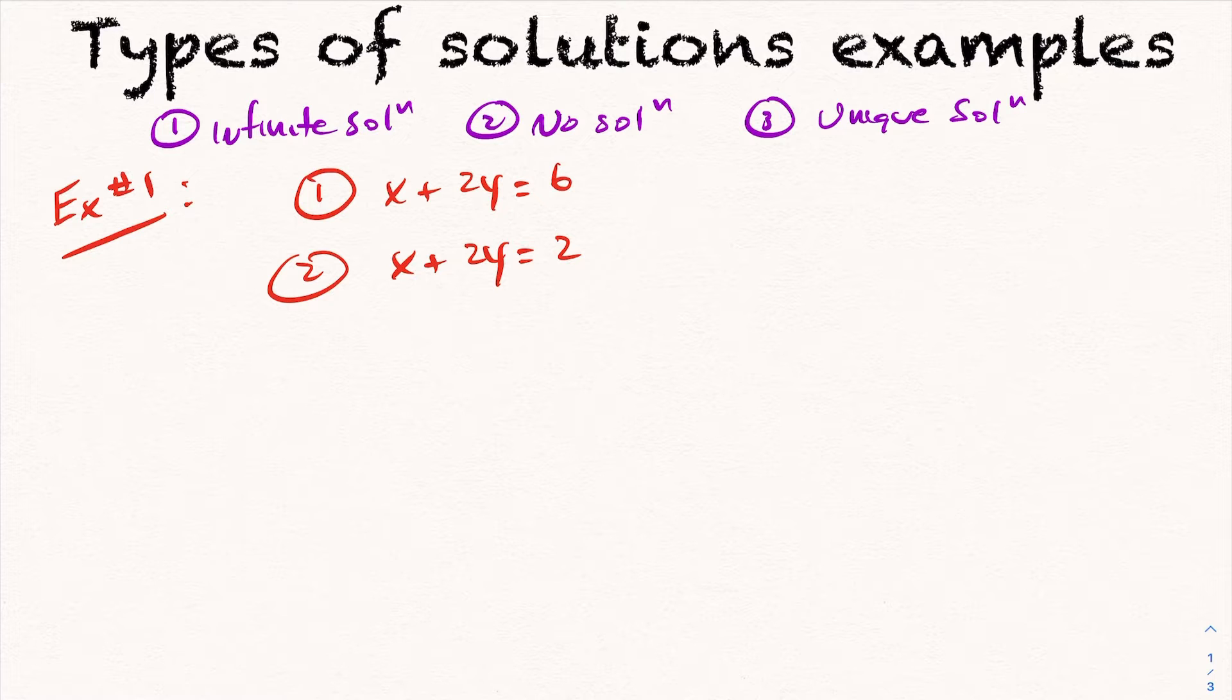So if you recall, infinite solution happened when the equations were exactly the same. No solution happened when the equations were parallel but had different y-intercepts, so they never crossed. And lastly, unique solution happens as soon as the slopes are different. As soon as the slopes are different, the lines have to cross.